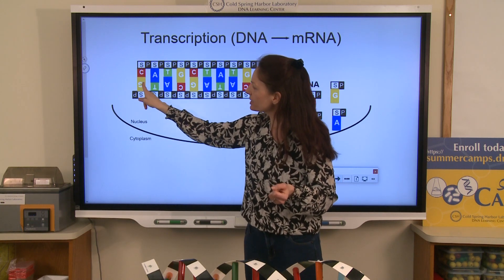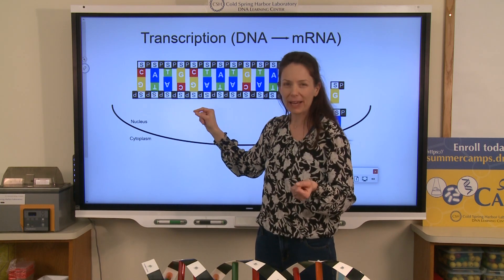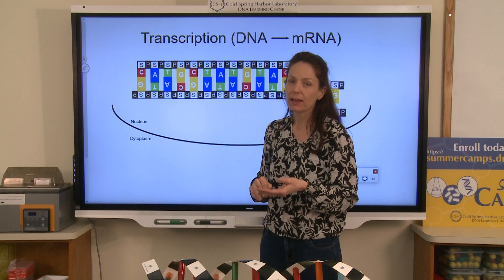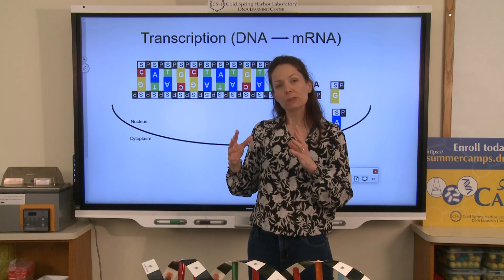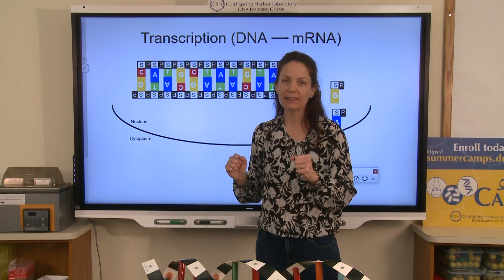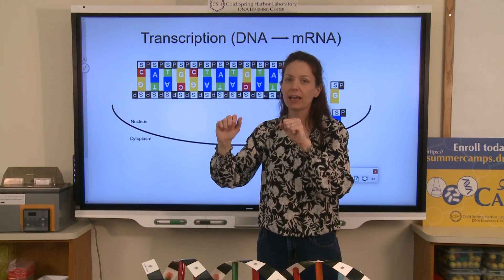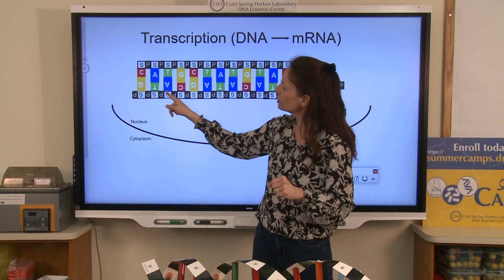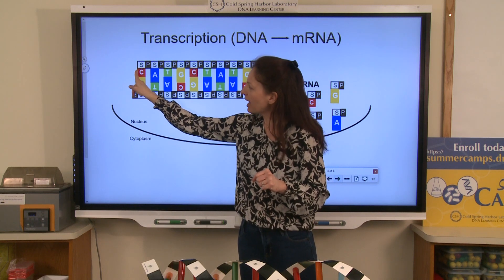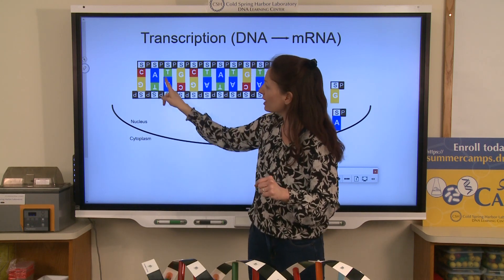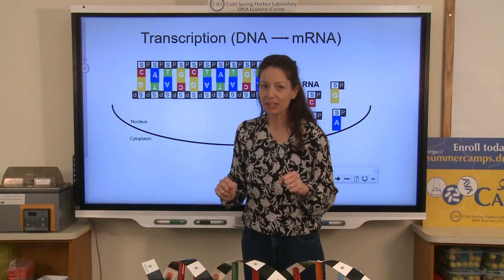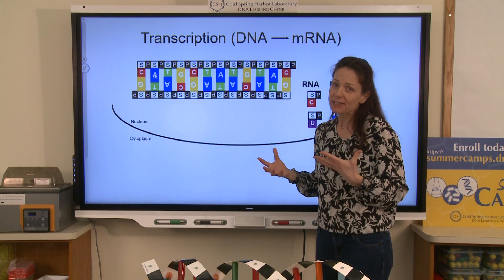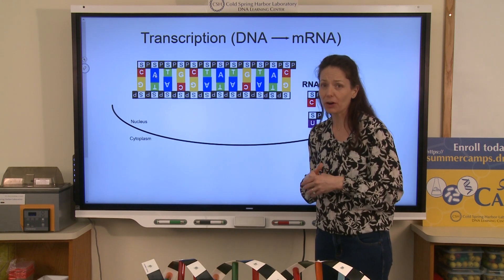In our DNA, on the outside we have a sugar phosphate backbone on both sides — our sugars and phosphates alternating. Attached to our sugars in the center of the molecule, we have our bases. These could be adenine, thymine, cytosine, and guanine. The bases pair up in a specific way: A pairs up with T, and G pairs up with C. We're going to be talking about RNA, which is a molecule that in many ways is very similar to DNA, but there are differences.